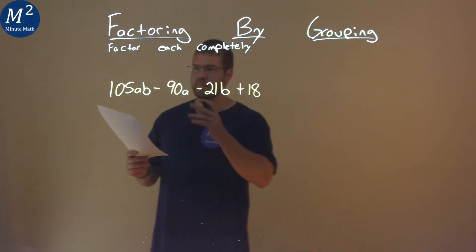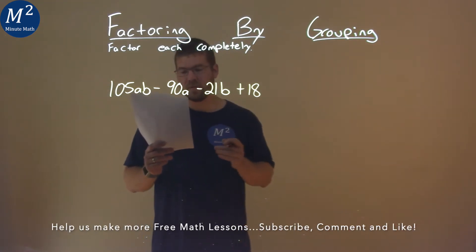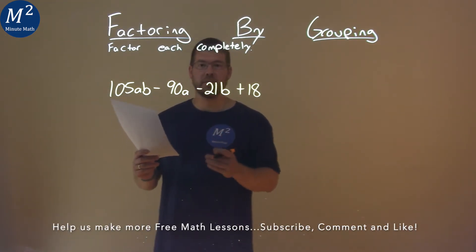We're given this problem right here: 105ab minus 90a minus 21b plus 18, and we need to factor this completely.